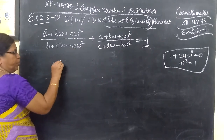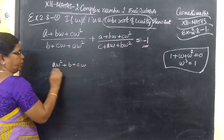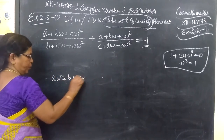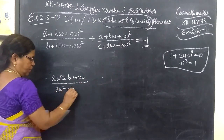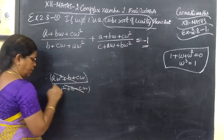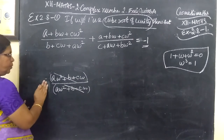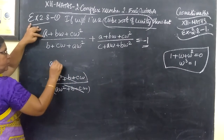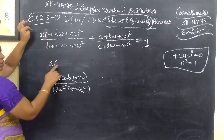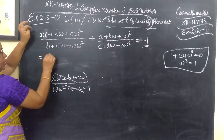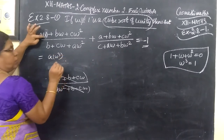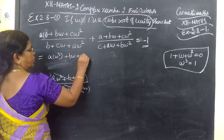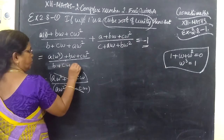Now, looking at the denominator and numerator — the numerator has two terms we can cancel. We write: A·ω² plus B plus C·ω in the numerator. On the left side we have A·ω² plus B plus C·ω, and 1 can be written as ω³. So A into 1 is equal to A·ω³.